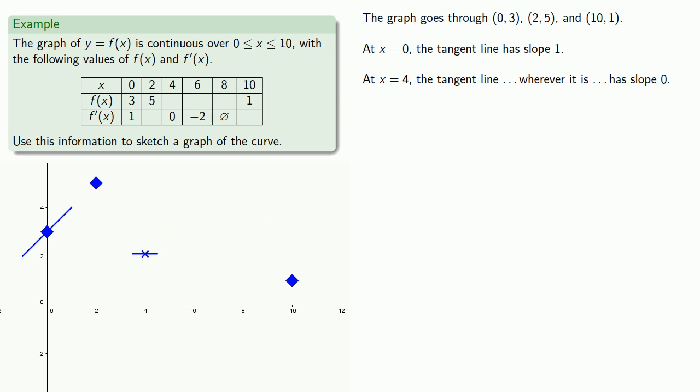Likewise, at x = 6, the tangent line, wherever it is, has slope -2. So we'll set down our placeholder point and run a line with slope -2 through it.